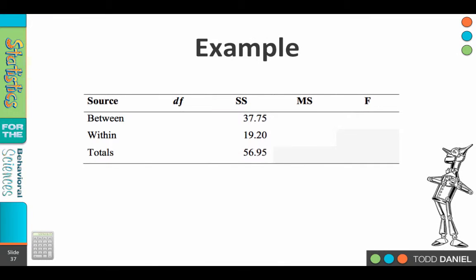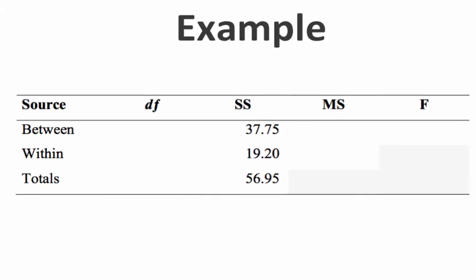Alright, welcome back. Let's see if you did this right. The degrees of freedom between, 3 degrees of freedom within, 16 and total degrees of freedom, 19.